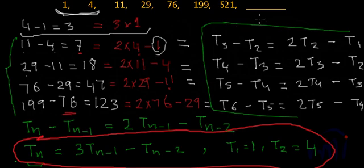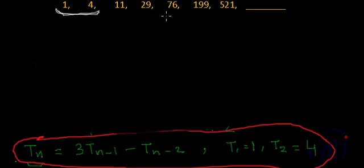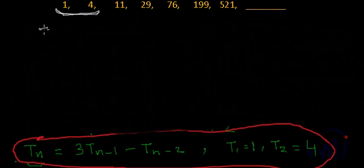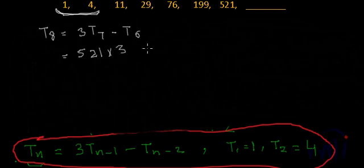How to calculate this term, the term after 521? We will calculate using this formula. Since 521 is the 7th term, we have to find the 8th term. So t8 will be 3 times t7 minus t6. What is t7? It is 521, so 521 multiplied by 3 minus t6, which is 199.